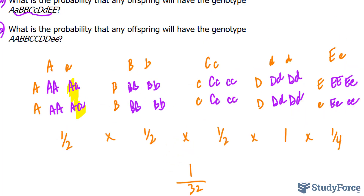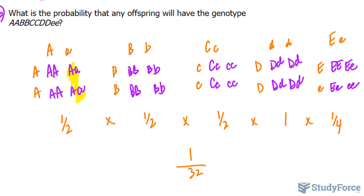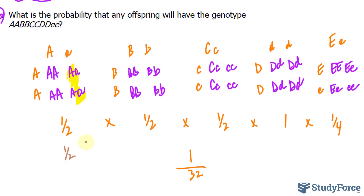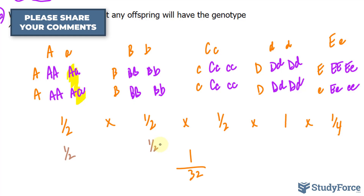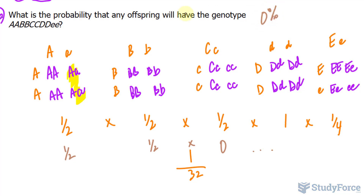The next question: this time they want capital A capital A — that's a one in two chance. Capital B capital B — one in two. Capital C capital C does not happen at all, so it's multiplied by zero. We don't even need to continue with this calculation because anything times zero makes zero. There is a zero percent chance that the offspring will have this genotype — no chance.